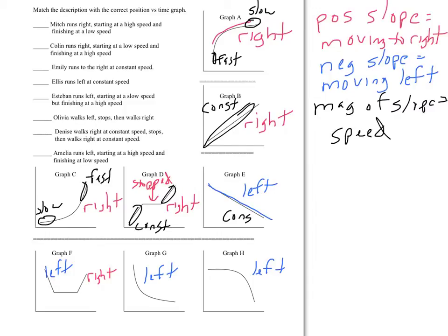Graph E, this is also constant because it doesn't change. Graph F, all the speeds are constant because they're straight lines at each point. Graph G starts off pretty steep, so that's fast, and then it flattens out, so that's slow. Whereas graph H starts off slow and then gets steeper, so it's fast.